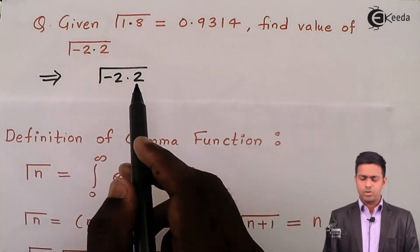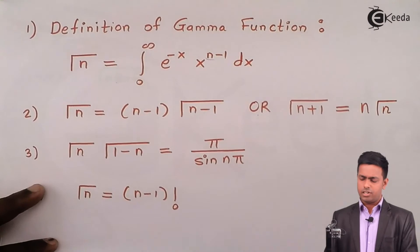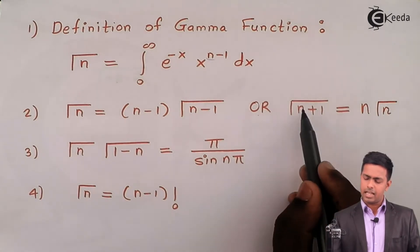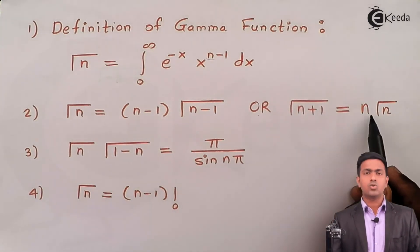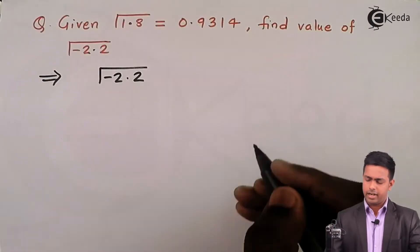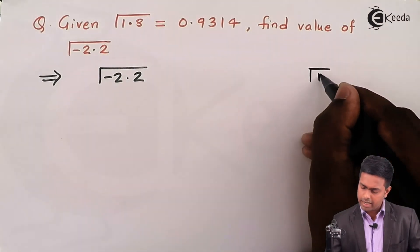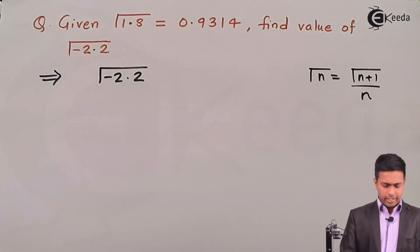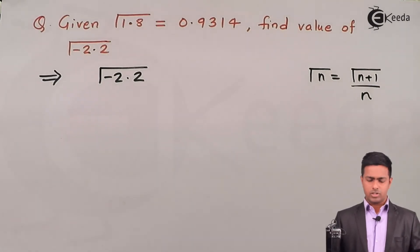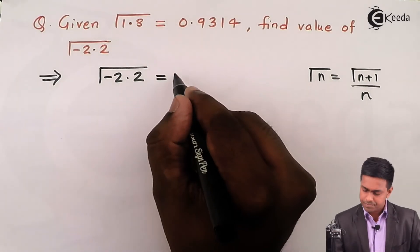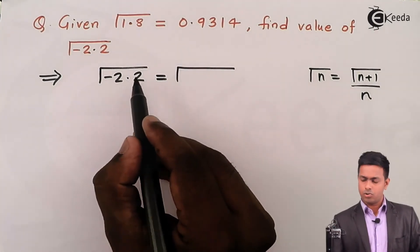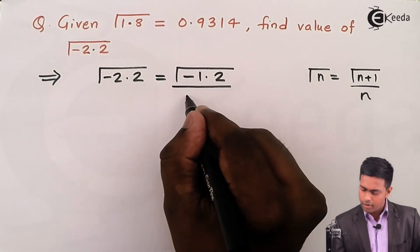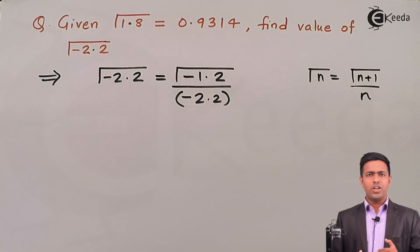To switch to the positive side, we change the formula. Instead of using property 2 directly, we rearrange it to: gamma(n) = gamma(n+1) / n. By doing this, we can change the negative number inside gamma to a positive number. With n = -2.2, we get gamma(-2.2) = gamma(-2.2 + 1) / (-2.2) = gamma(-1.2) / (-2.2).